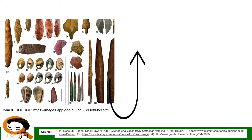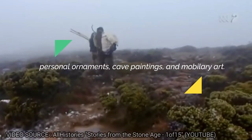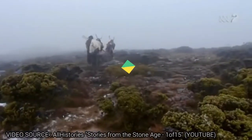Under the Stone Age are the Paleolithic or Old Stone Age, Mesolithic or Middle Stone Age, and Neolithic Age. For the Paleolithic or Old Stone Age — from the first production of stone artifacts 2.5 million years ago to the end of the last ice age around 9600 BC — it has the first recorded expressions of artistic life: personal ornaments, cave paintings, and mobility art.